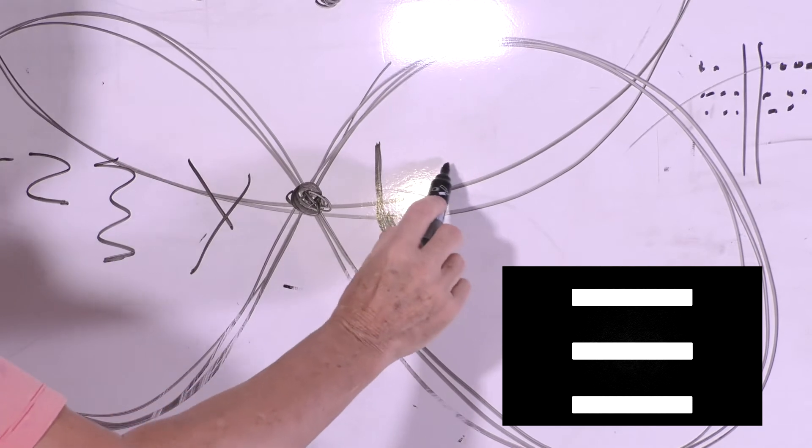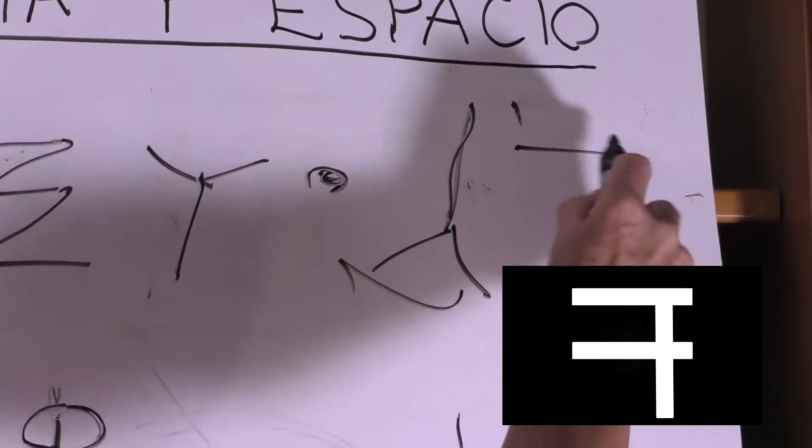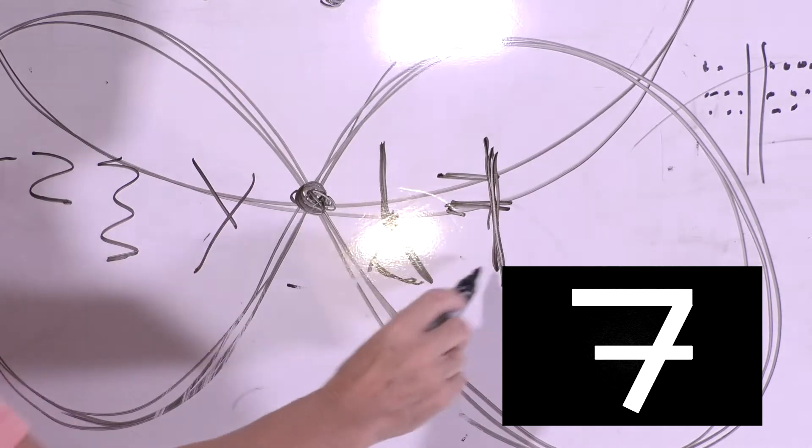In the next gap, they took one of the three lines and crossed the other two with it, forming our number seven.